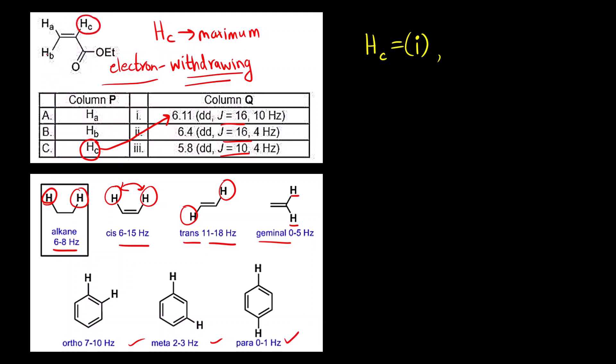If you compare H_C and H_B, they are trans to each other. H_C is trans to H_B. And what is a coupling constant value for trans? It is 11 to 18. Which value falls between 11 to 18? 16. For H_C and H_B, for both these cases, the coupling constant will be same. For H_C, the value of J is 16. For H_B also, the coupling constant will be 16 because they are trans to each other.